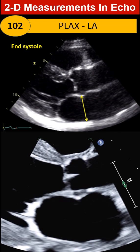Based on the aorta, American and European society measurements end systolic at coronary sinus level, outer to inner, perpendicular to the posterior wall.